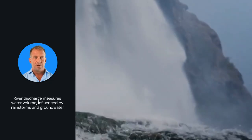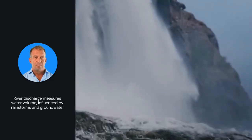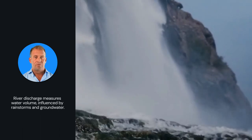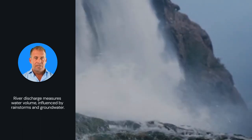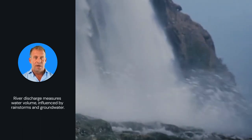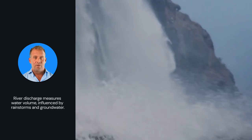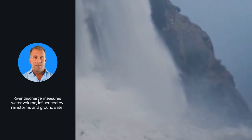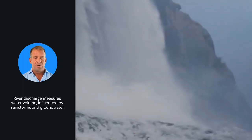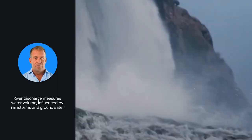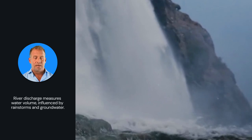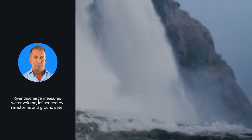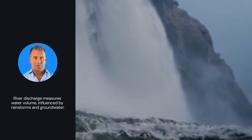Now let's discuss river discharge, which measures the volume of water that flows through a river over time. This discharge fluctuates significantly after events like heavy rainstorms, primarily due to increased surface runoff, while the regular flow is largely maintained by groundwater contributions.